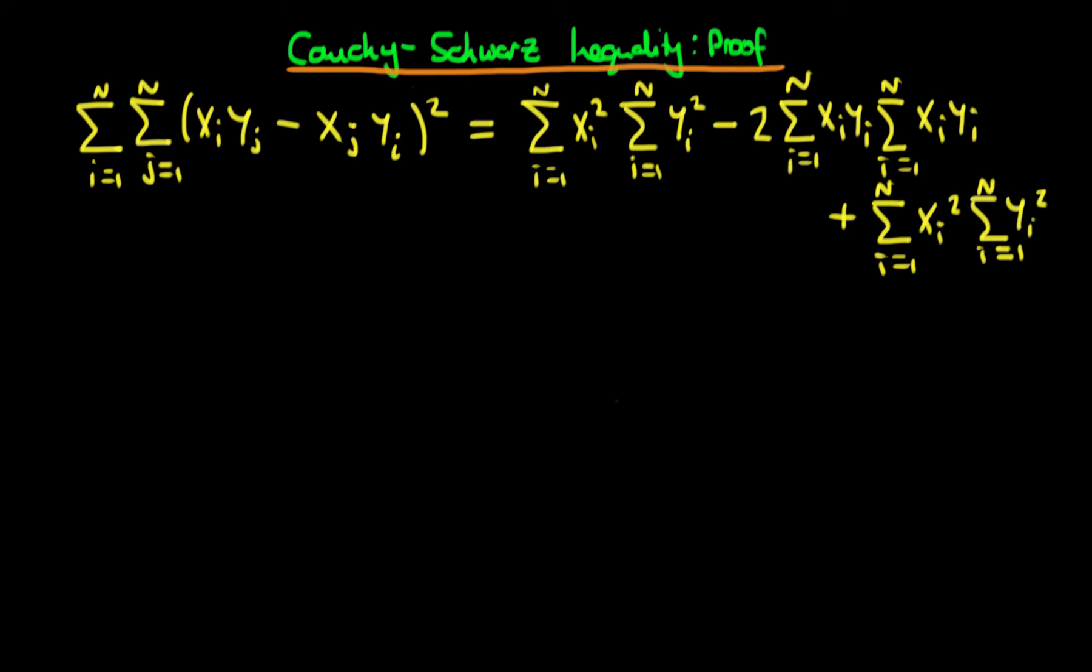In this video we're going to finish our proof of the Cauchy-Schwarz inequality. So at the end of the last video we have that this double sum on the left hand side is equal to this mess of terms on the right hand side.